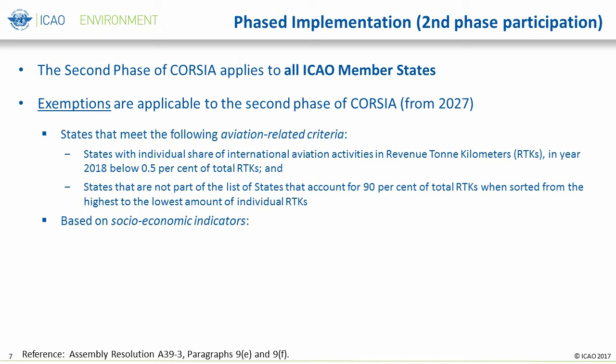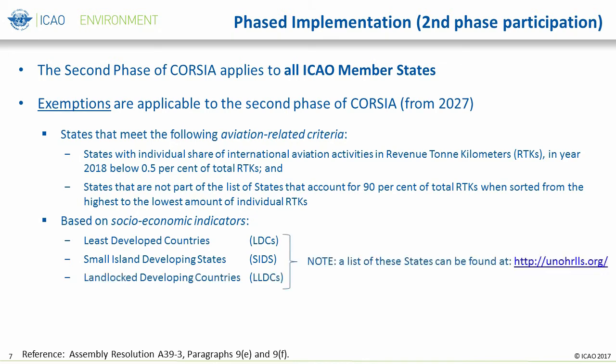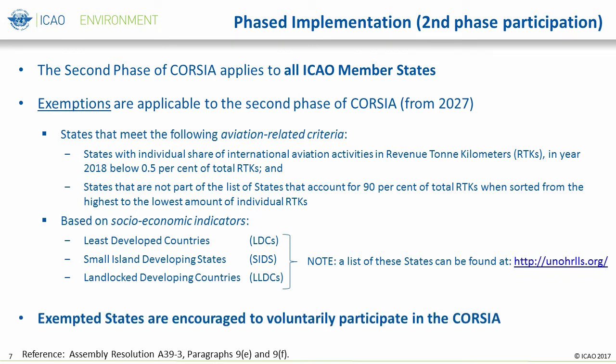The second set of exemption criteria is based on socioeconomic criteria. These states are defined as least developed countries, or LDCs, small island developing states, or SIDS, and landlocked developing countries, or LLDCs. Regardless of the level of international aviation RTK share, these LDCs, SIDS, and LLDCs are also exempted from the second phase of CORSIA. That said, these states exempted by aviation-related criteria and socioeconomic criteria are still encouraged to voluntarily participate in CORSIA.